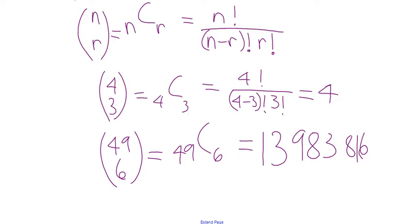Somebody does eventually win because enough tickets are bought to cover those almost 14 million possible combinations, and then somebody wins.